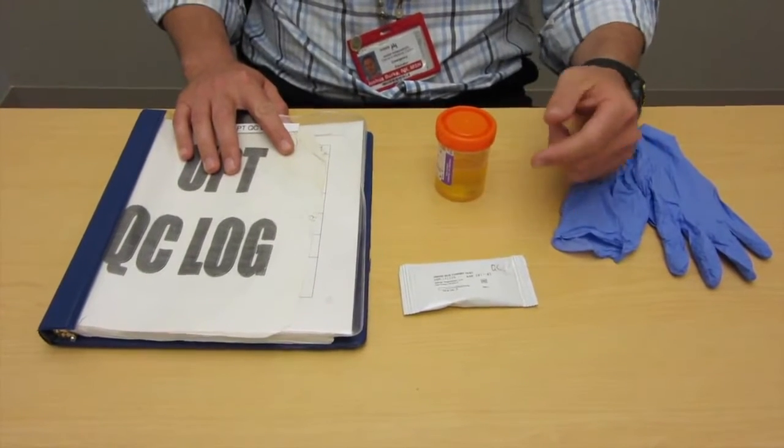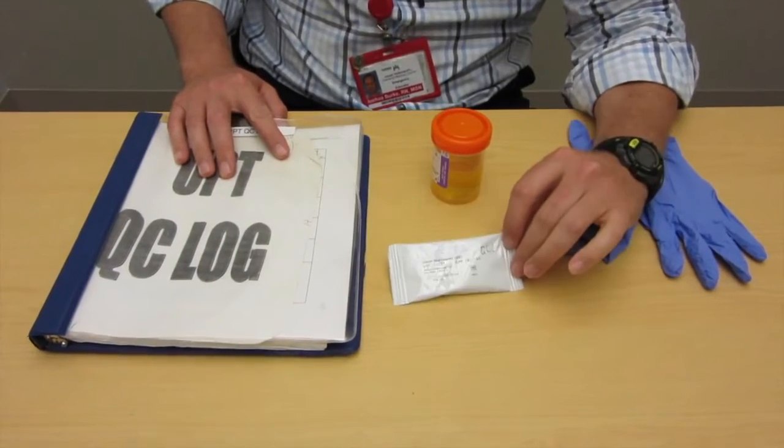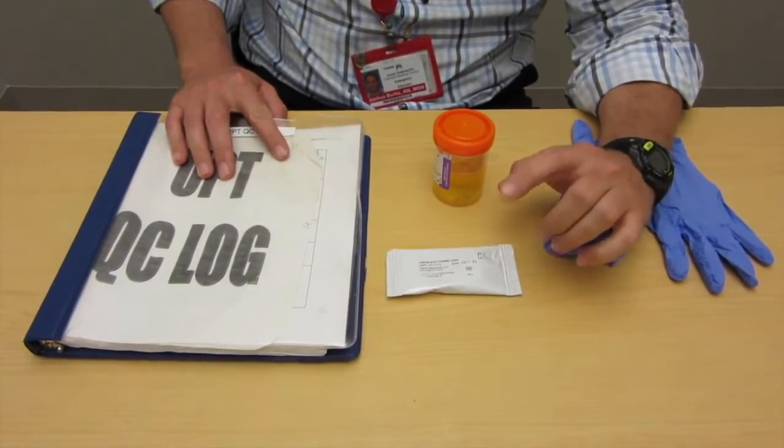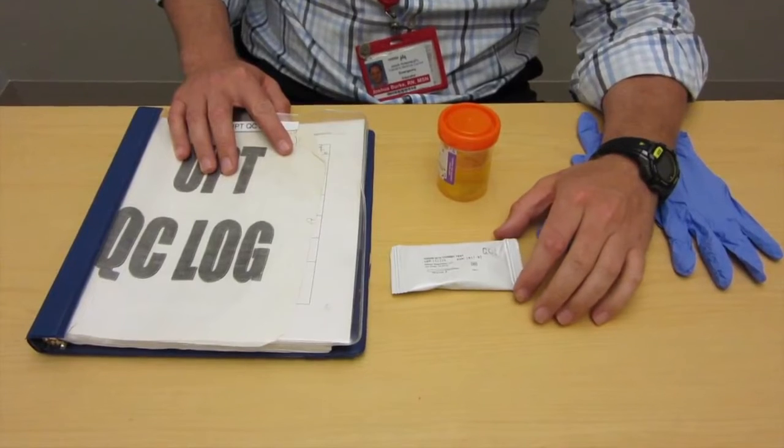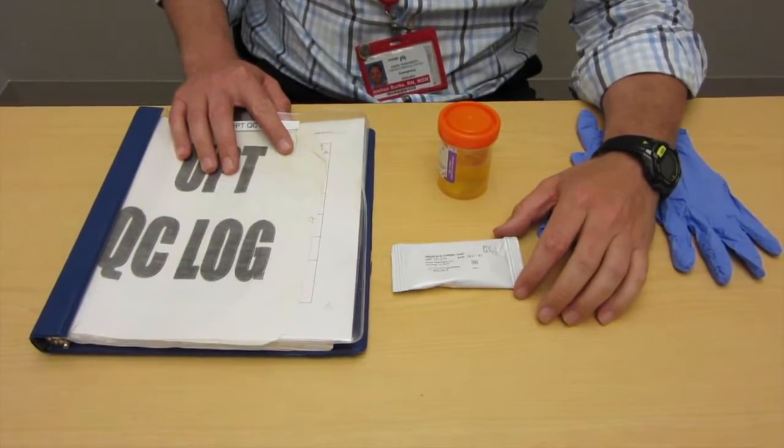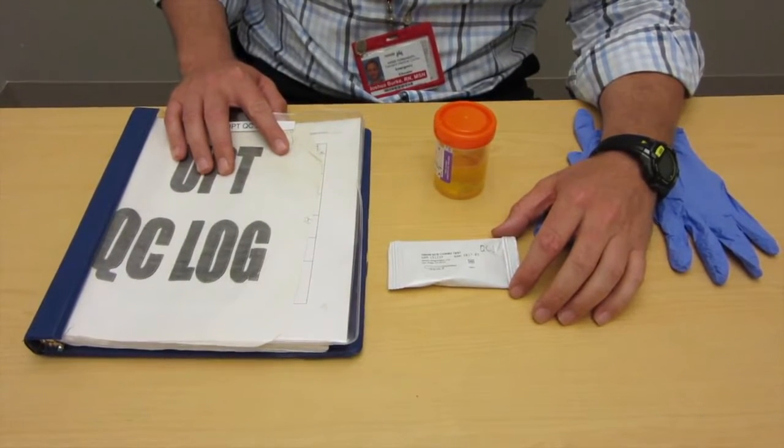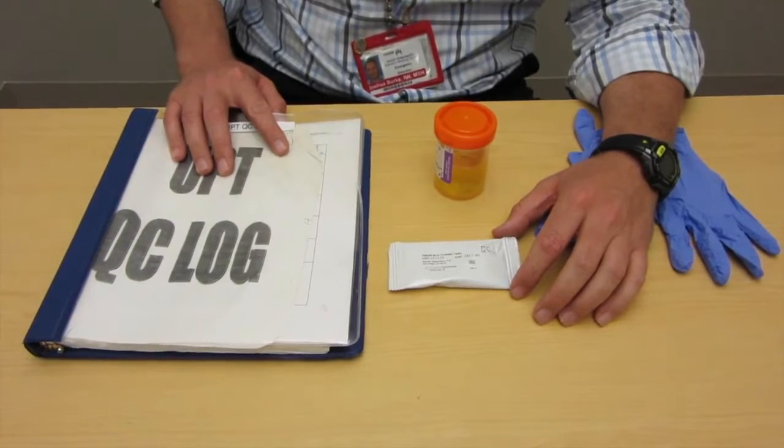Okay, so here's a quick introduction to the urine pregnancy test kits that we use at both campuses. These are essentially OSIM HCG combo tests and they give us a result of pregnant or not pregnant qualitatively within three minutes.